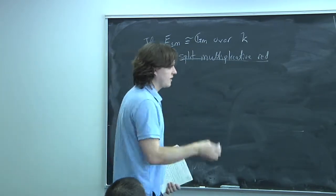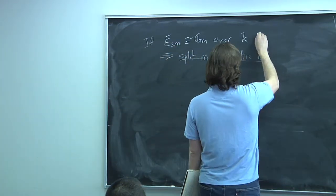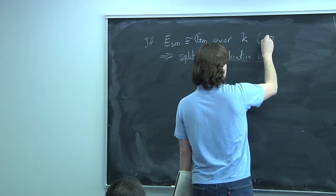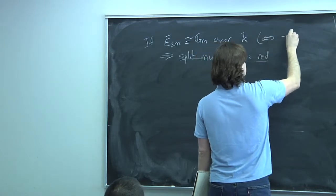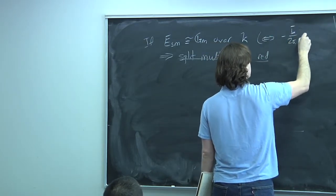Split multiplicative reduction is equivalent to -b̄/(2ā) being a square.